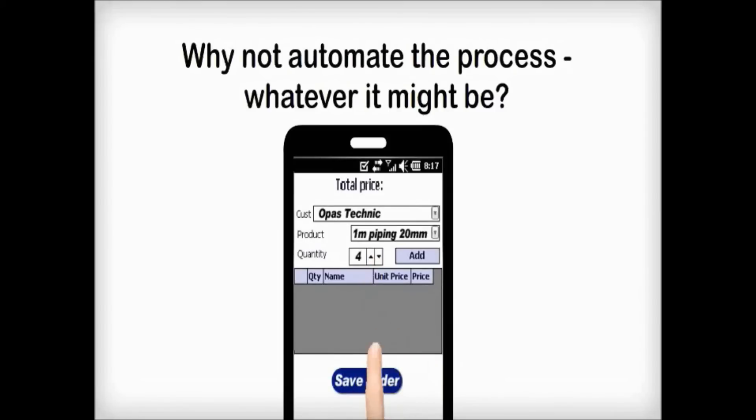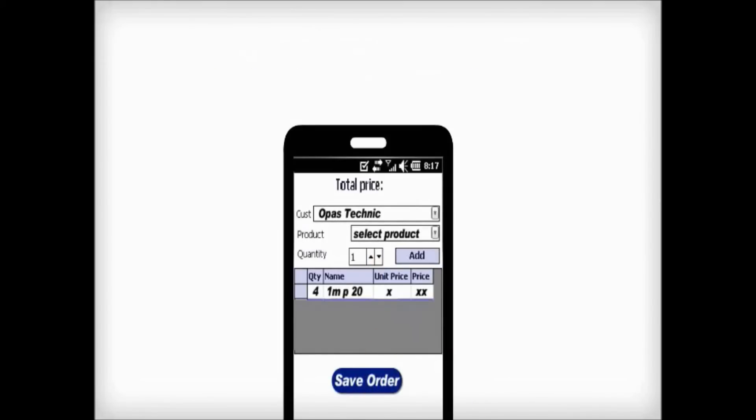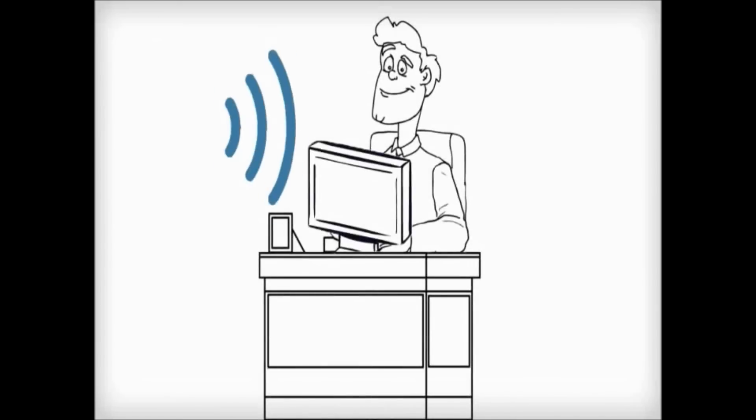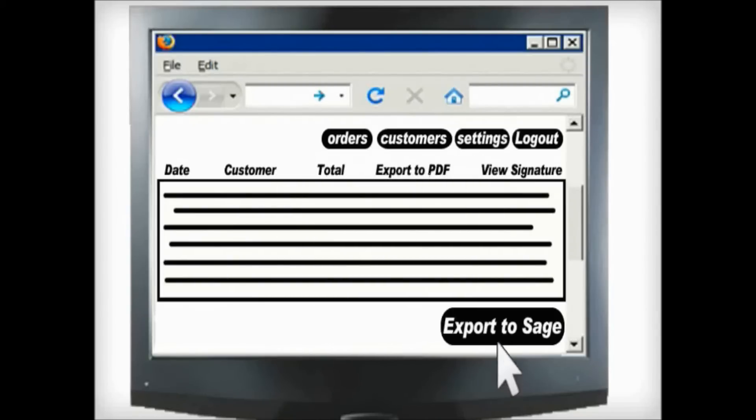Create orders in the field? Dispatch jobs onto your mobile workforce? No problem. All the data captured by your mobile workforce will be in the office immediately. From there, it can be automatically synchronized with your accounts package, for instance, Sage.